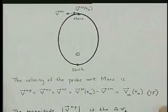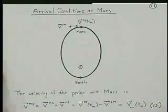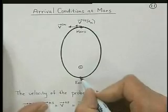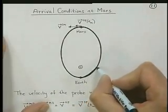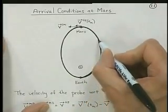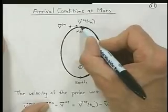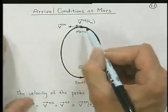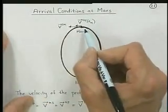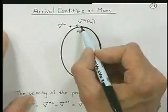Now, what are our arrival conditions at Mars? We're traveling from the Earth. Now we're just considering the gravity of the Sun for the moment. And we get out here. We want to know what is the approach speed as seen from Mars.